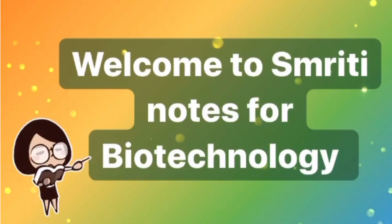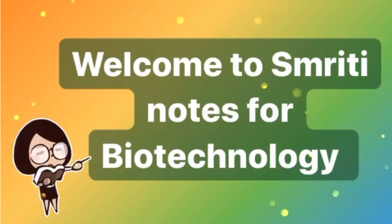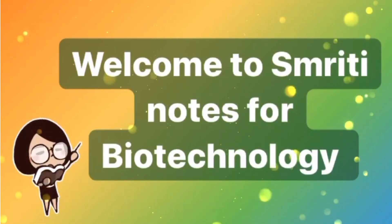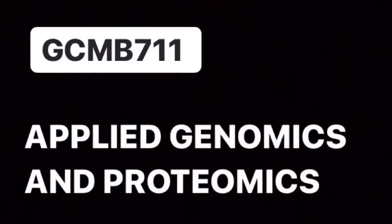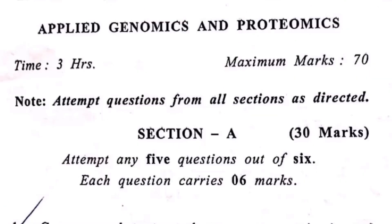Hello guys, welcome back to Smithi Notes for Biotechnology. In today's video, we will be going through last year question papers of Genomics and Proteomics. Usually, Amity has changed the course code but the syllabus has been the same, so there may be chances that one or two questions may be out of your syllabus. Still, just Google the answer and get a rough idea. Let's start with the first paper — Applied Genomics and Proteomics. Section A has six questions and you are supposed to attempt any five.